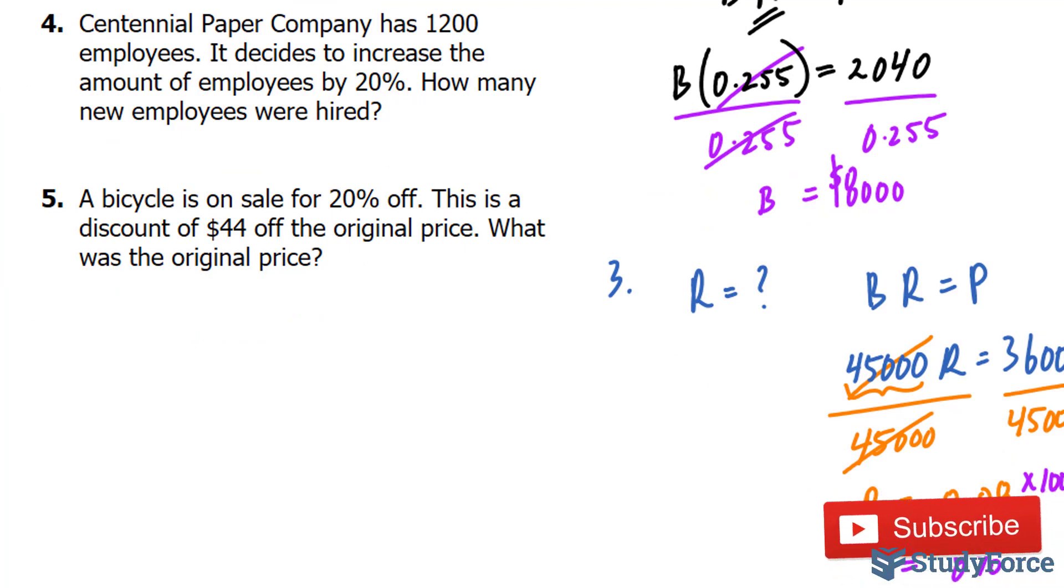Question number four asks, Centennial Paper Company has 1,200 employees. It decides to increase the amount of employees by 20%. How many new employees were hired? So the base value here, what we're starting off with, is 1,200. And the company is increasing the amount of employees by 20%. So we need to find, the question is asking how many new employees were hired, not the total number of employees after the hiring.